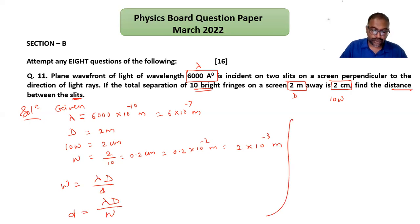Let me substitute the values. Small d is equal to lambda, which is 6 into 10 to the minus 7, multiplied by capital D, 2, divided by the fringe width, 2 into 10 to the minus 3. This 2 gets canceled, so we get the answer 6 into 10 to the minus 7 plus 3, so minus 4. So d is in meters.